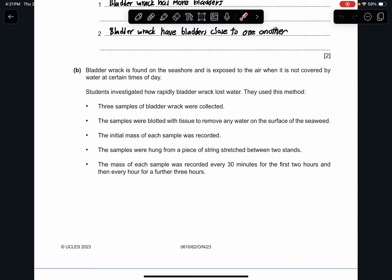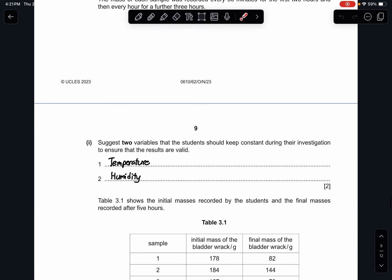Part D. Bladder wrack is found on the seashore. It's exposed to the air when it's not covered by water at a certain time of day. Then, to investigate how rapidly bladder wrack lost water, they use this method. Three samples of bladder wrack were collected. The samples were blotted with tissue to remove any water on the surface of the seaweed. The initial mass of each sample was recorded. The samples were hung from a piece of string each stretched between two stands. The mass of each sample was recorded every 30 minutes for the first two hours and then every hour for a further three hours. Suggest two variables that the students should keep constant during their investigation to ensure that the results are valid. The temperature must be kept constant. The humidity must be kept constant. And other factors could be like the wind speed.